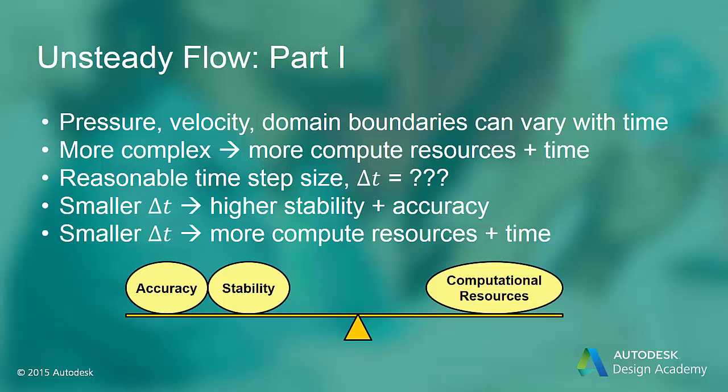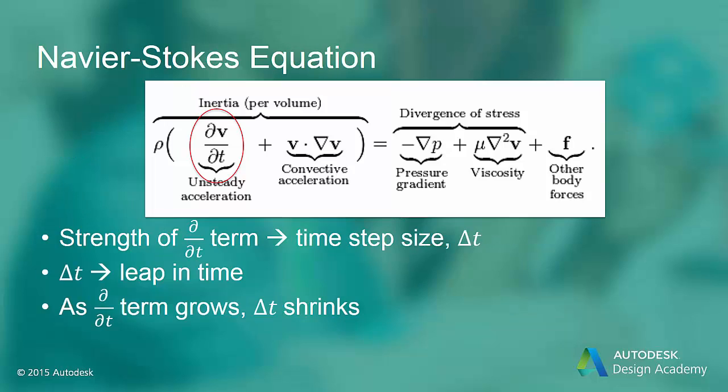If the time step is too large, the CFD transient solution may diverge or introduce non-physical variations of dependent variables. So there is a balance of numerical stability and accuracy with the computer resources available. For unsteady flow, the additional term carrying the time derivative takes prominence and cannot be ignored.